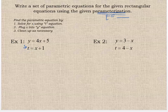Starting with example one, if t equals x plus one, I'm going to start here and solve it for x. So if t equals x plus one, I'm going to subtract one, so I find out that x equals t minus one. There's my first parametric equation. Look, it has t in it.